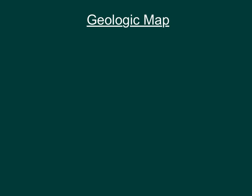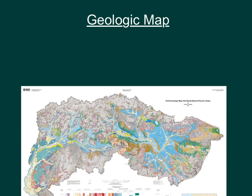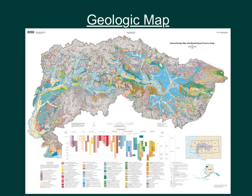The geologic map shows us the different compositions of the ground across the land. We are going to have the most diverse populations in the areas where the ground composition is more conducive to plants and the requirements that they need to grow. Using this map, you can see which areas you would want to choose to have a diverse population based off of the array of colors.